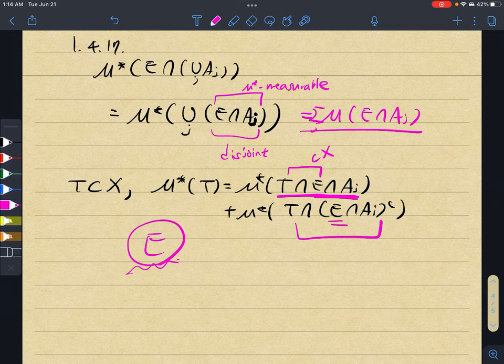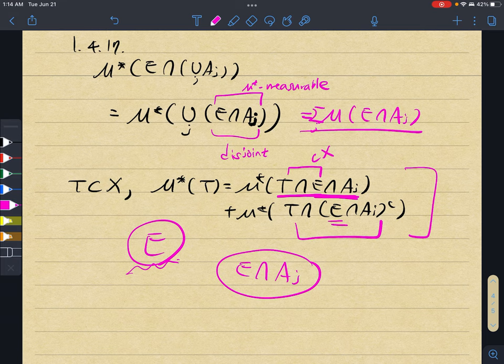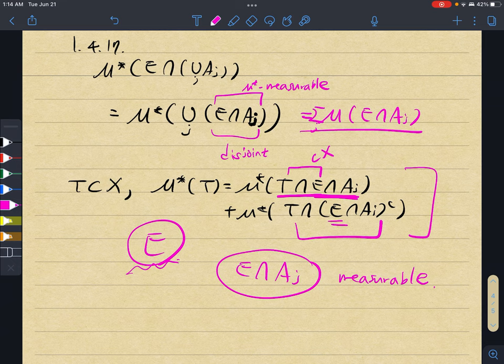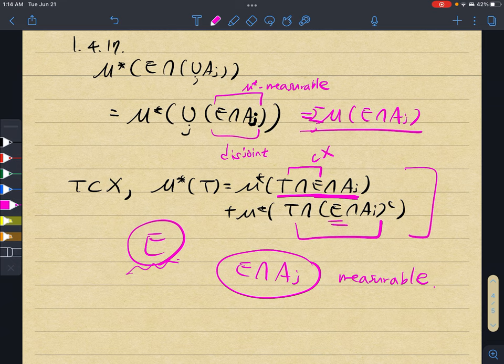So due to this fact, the property holds, which means that E ∩ Aj is in fact measurable. So using this fact, we can easily see that the above equality, which we wanted to hold, actually does hold.